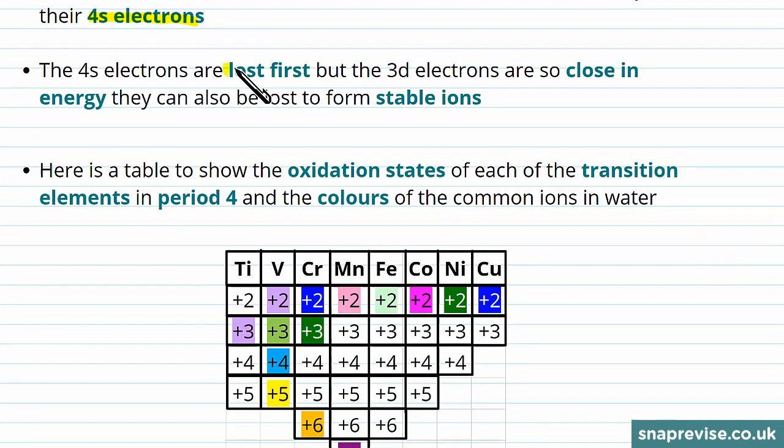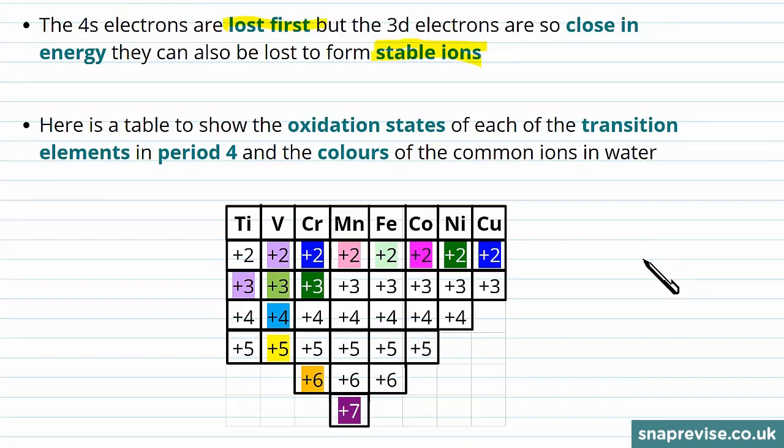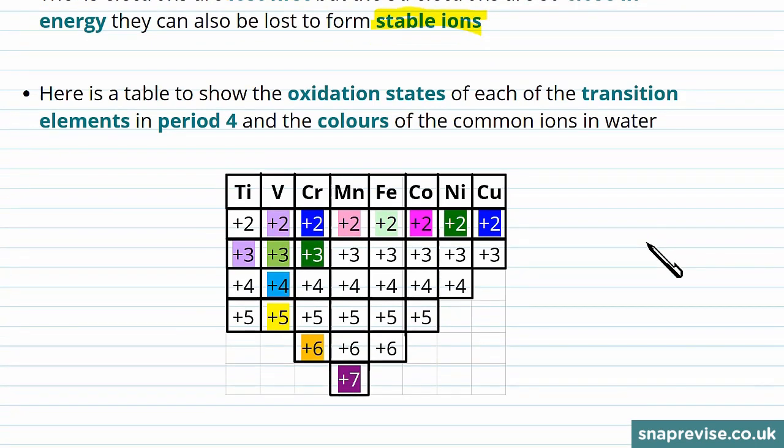Remember, there are two electrons in the 4s orbital, so losing those will form a 2+ ion. The 4s electrons are lost first, but because the energy levels of the 3d electrons are so close, the 3d electrons can also be lost to form stable ions for the transition metals. That's what makes them transition metals, the fact that they can lose some of their 3d electrons and form stable ions.